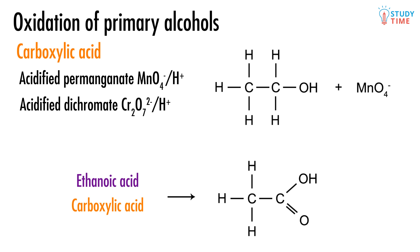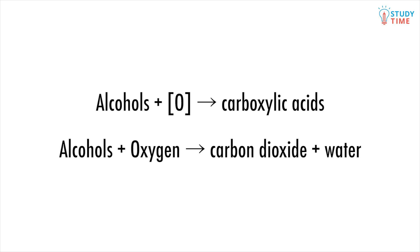The most important things here are that the OH group has been left alone, two hydrogen atoms have been lost from the carbon, and in their place we've got an oxygen atom double-bonded to the carbon. In general, in the presence of a catalyst, alcohols plus an oxidizing agent react to produce carboxylic acids. Alcohols can also be combusted, which is another kind of oxidation. Usually this is complete and alcohols burn cleanly — alcohols plus oxygen reacts to produce carbon dioxide and water.